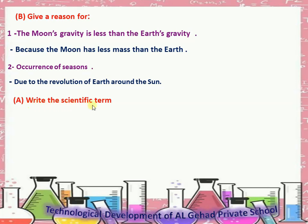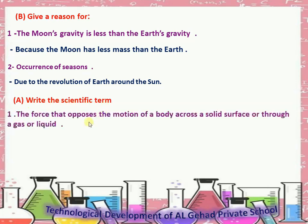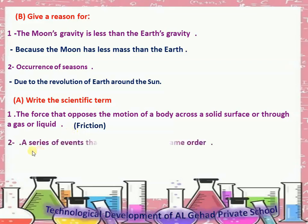Write the scientific term. Number 1: The force that opposes the motion of a body across a solid surface or through a gas or liquid. Answer: Friction. Number 2: A series of events that is repeated in the same order. Answer: Cycle.